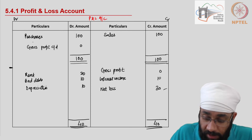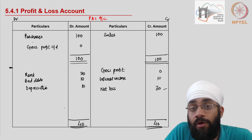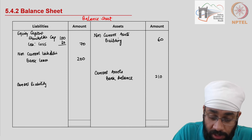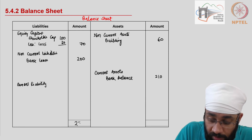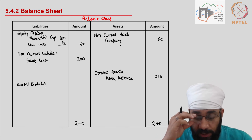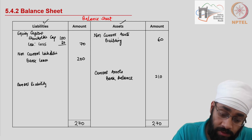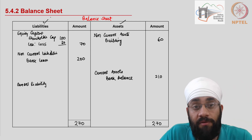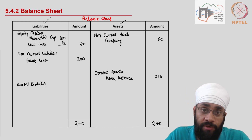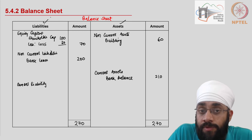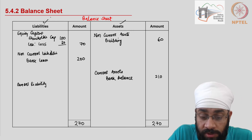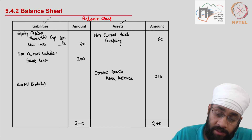Since there was a loss, profit cannot contribute to shareholder capital - instead the capital has been reduced. The total of the liability side is 270 and the total of the asset side is also 270. The accounting equation states assets equal liabilities, and this holds true. We've gone from journal to ledger to trial balance and now to balance sheet and income statement, and the double entry system and accounting equation both hold.